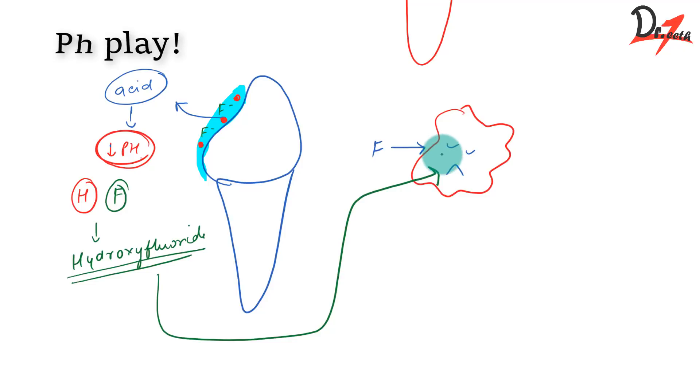Now once it goes inside the cell it will again dissociate and it will release the fluoride ion inside and this will interfere with the essential enzyme activity. Therefore it will inhibit the bacterial metabolism and it will also inhibit the plaque formation and thus it will prevent the dental